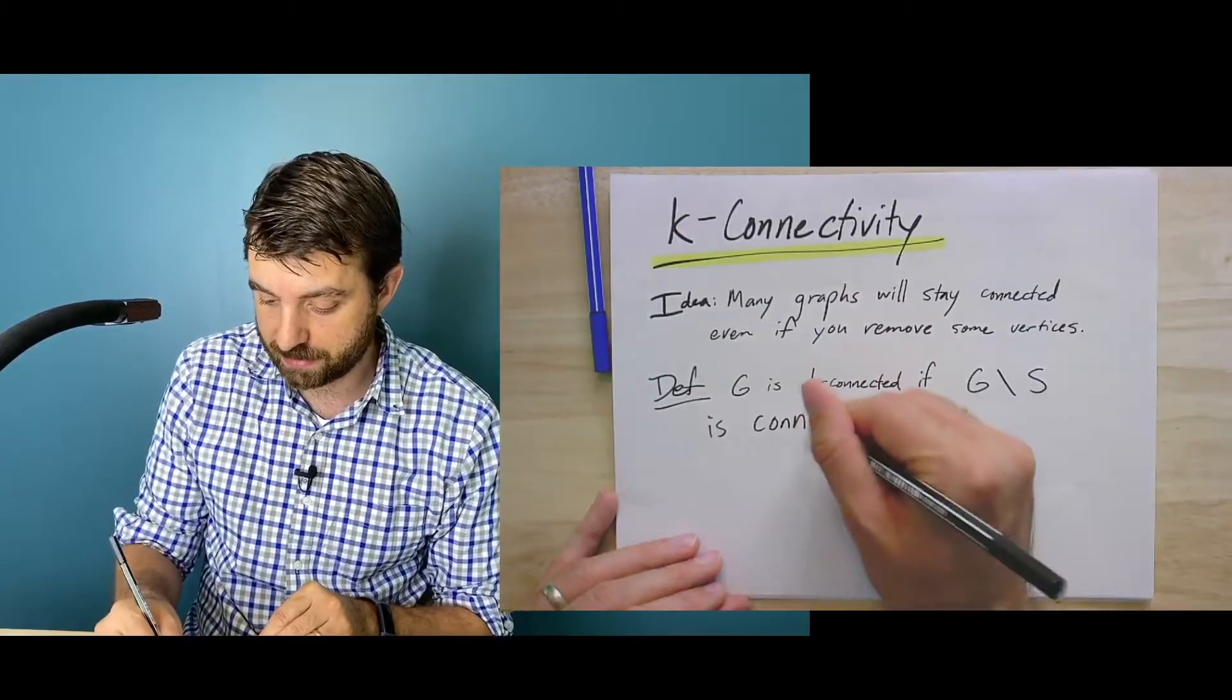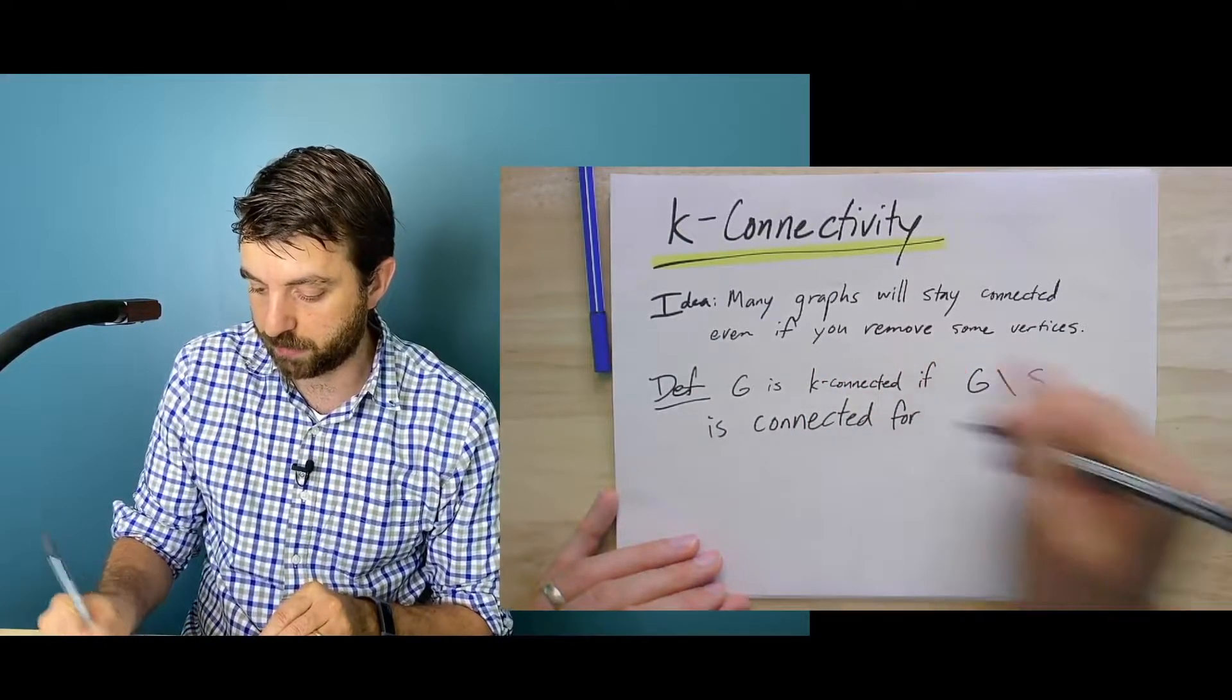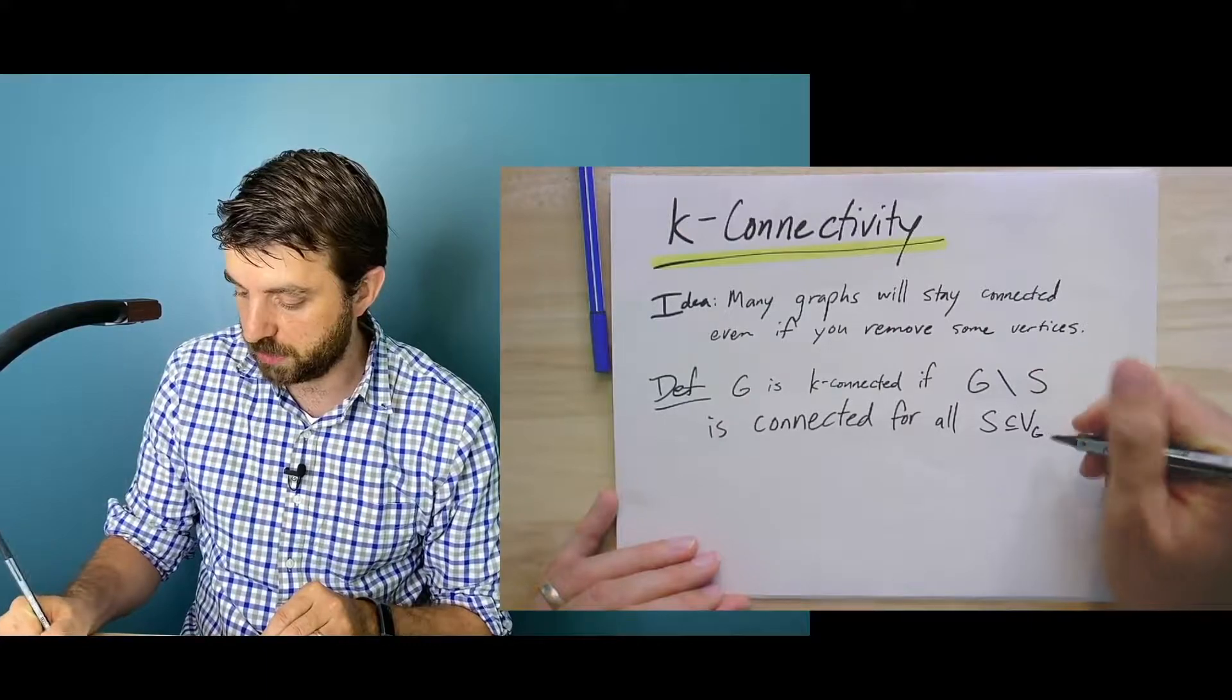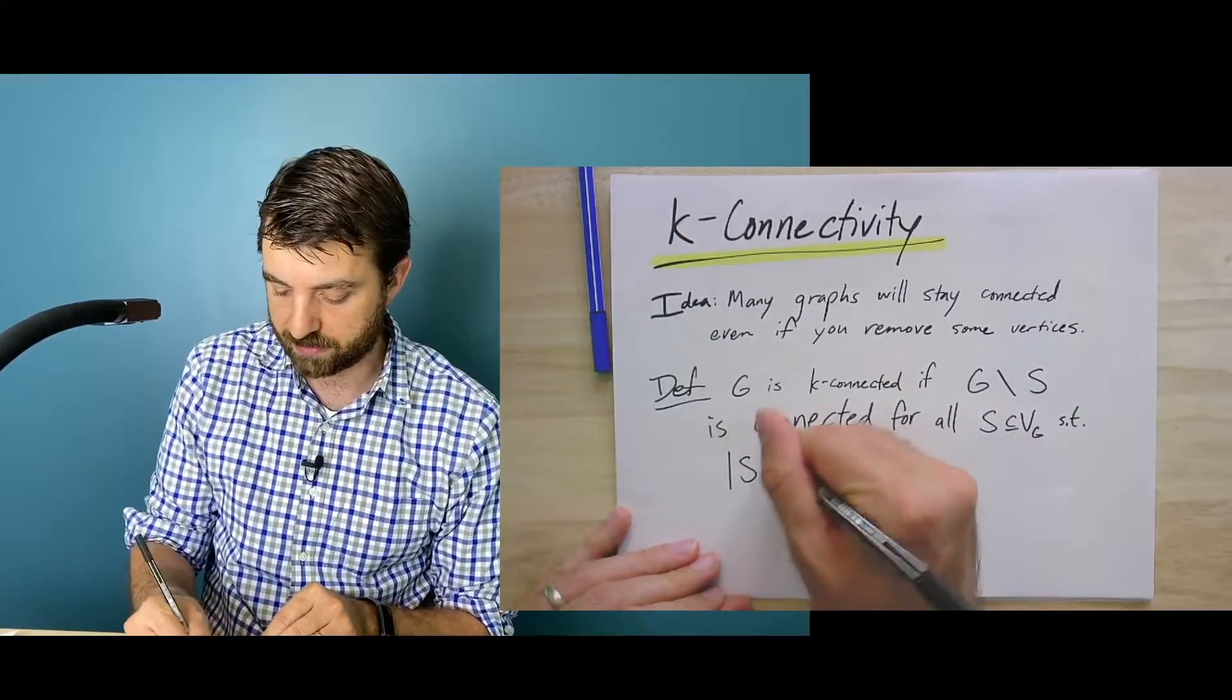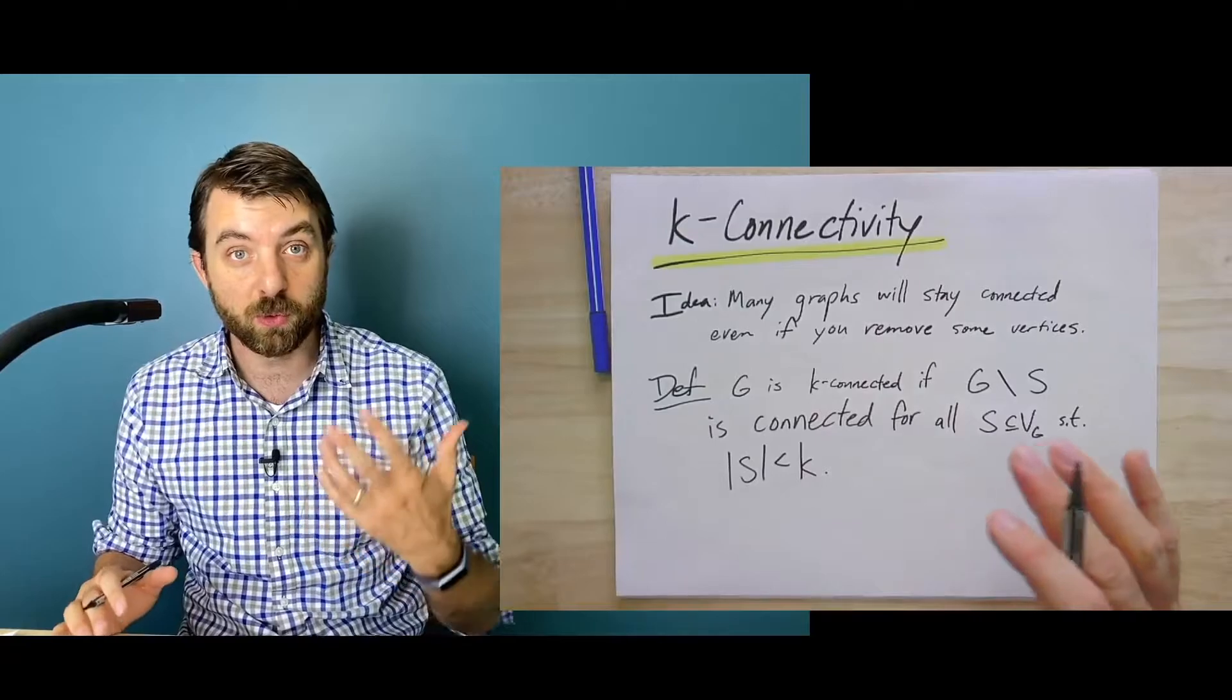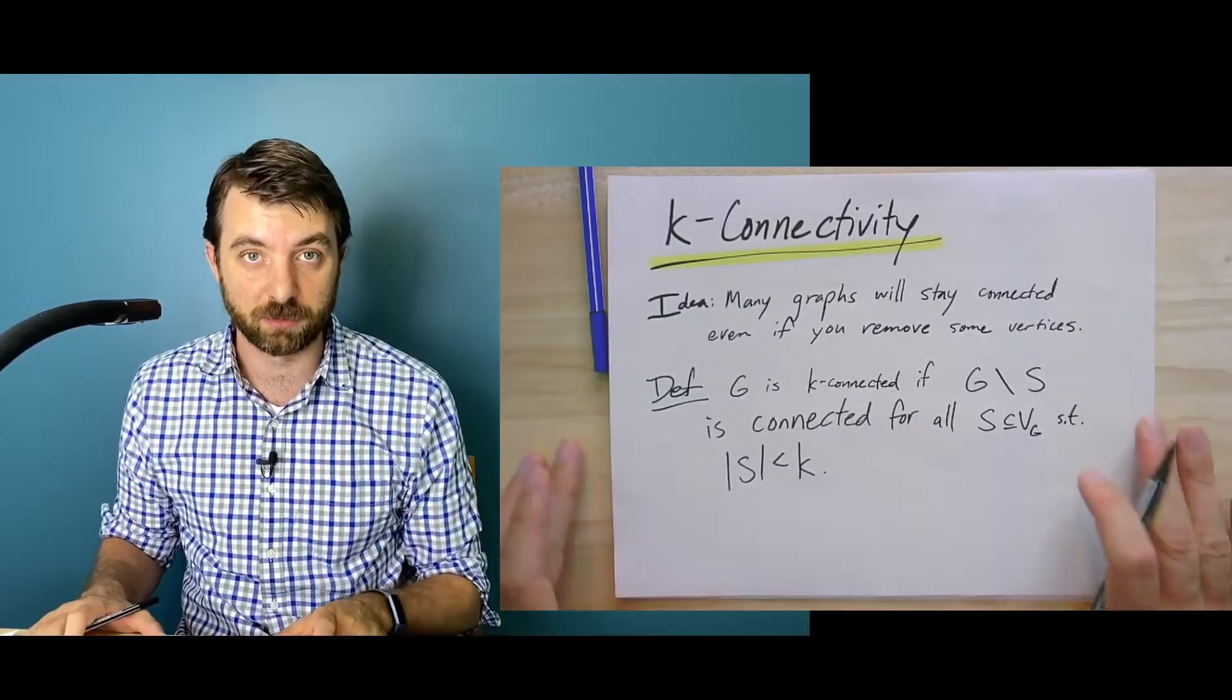So G minus S is connected for any, I should be careful about my words here, for all subsets S of V_G such that the size of S is less than K. Strictly less than K. This is really important. So if I remove fewer than K vertices, it's still connected. That's what it means to be K-connected.